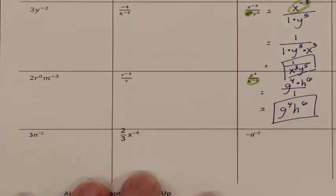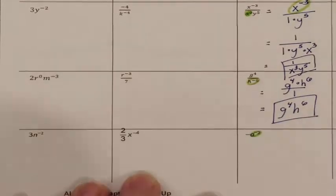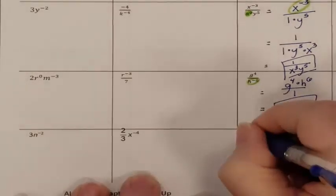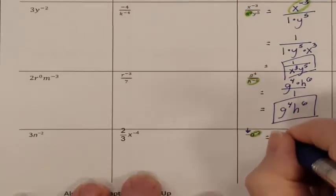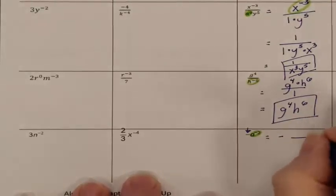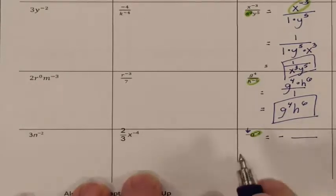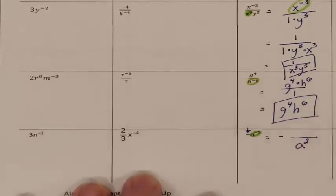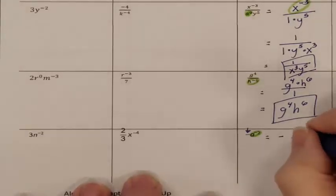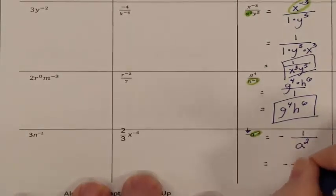Next problem. This negative exponent is only touching the A — it is not touching the negative sign here. So the negative sign is going to stay exactly where it was. Here's my fraction bar. The A needs to move: it's currently in the numerator and will move to the denominator, getting a positive exponent. The numerator is not allowed to be empty, so it's a 1. The final answer is negative 1 all over A to the 2nd power.